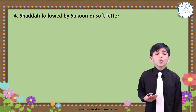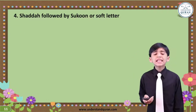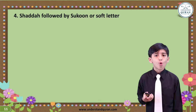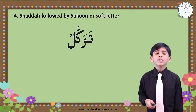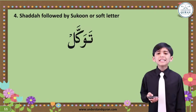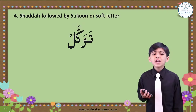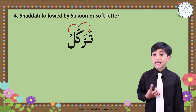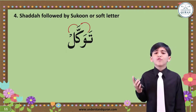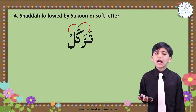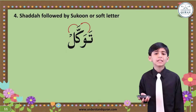Rule number 4: Shadda is followed by Sukun or soft letter. So in this case, Tawakal — the Waw is helping the Kaf, and the Kaf with Fatha is helping the Lam. And we read it like this: